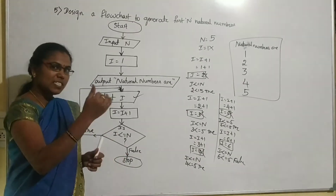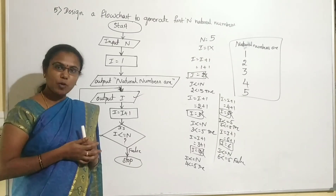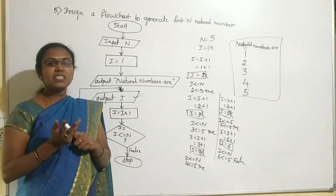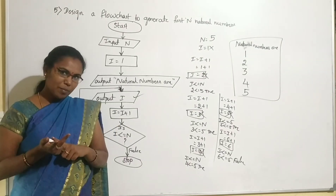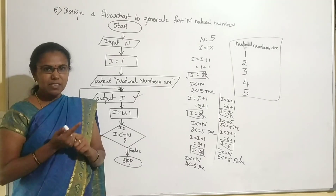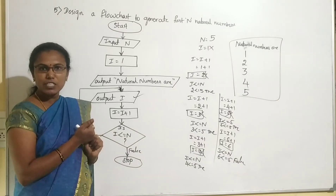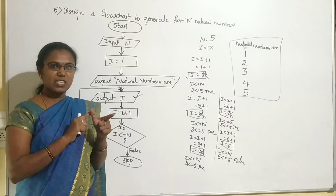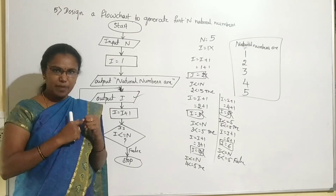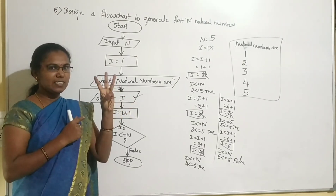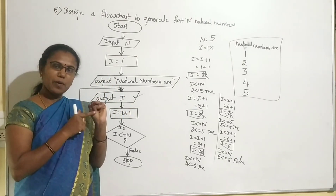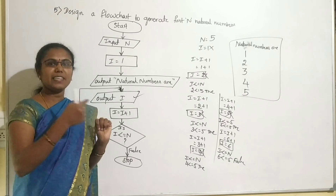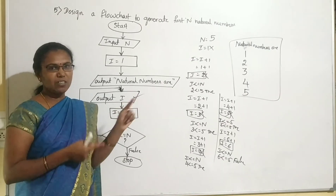There are 7 stages used to solve a given problem. The first is problem definition. Second is problem analysis. Third is problem design — using designing tools such as algorithms and flowcharts. Fourth is coding. Fifth is testing and debugging. Sixth is documentation. Seventh is maintenance. We have now completed the first three stages: problem definition, problem analysis, and problem design using algorithms and flowcharts.